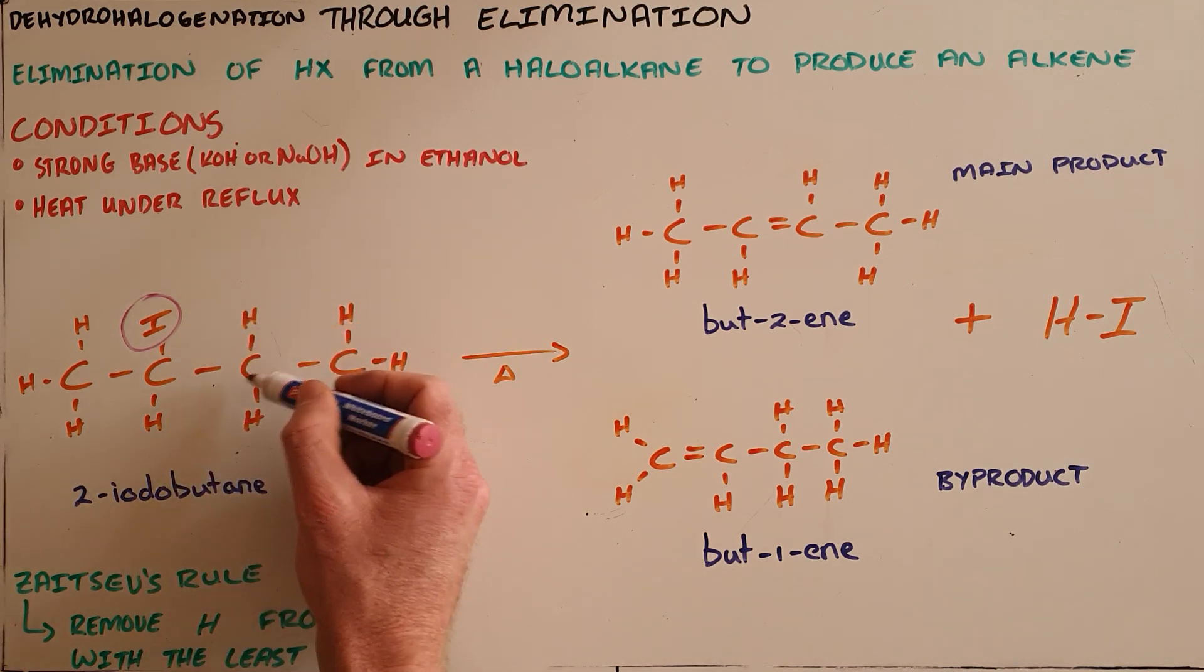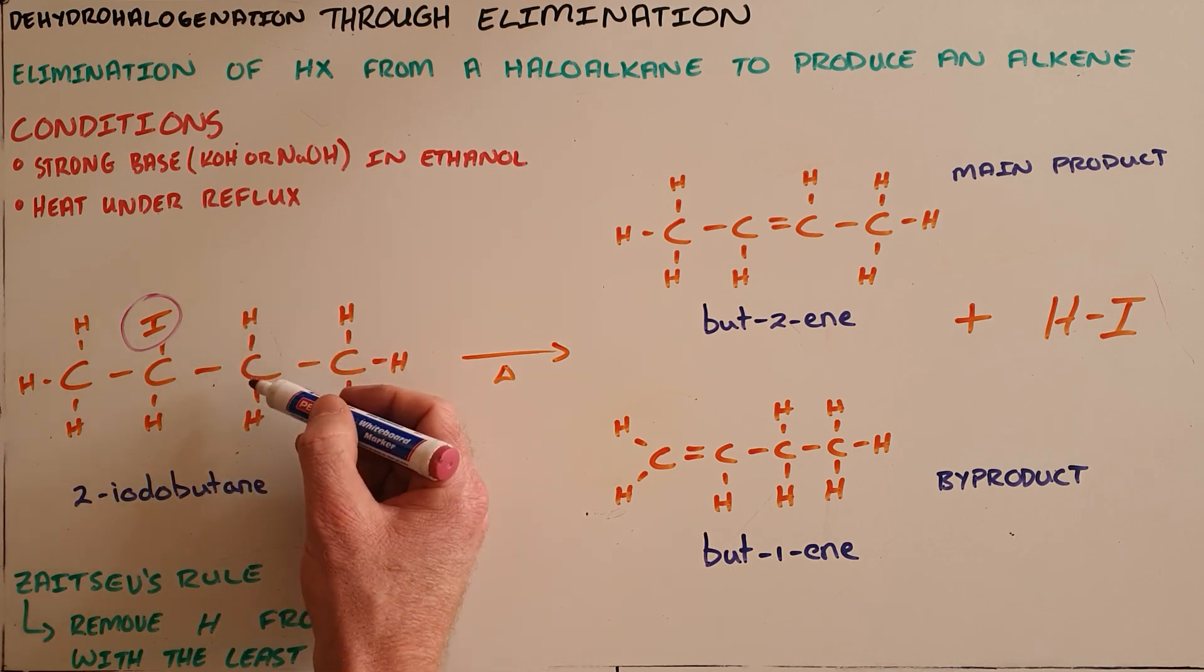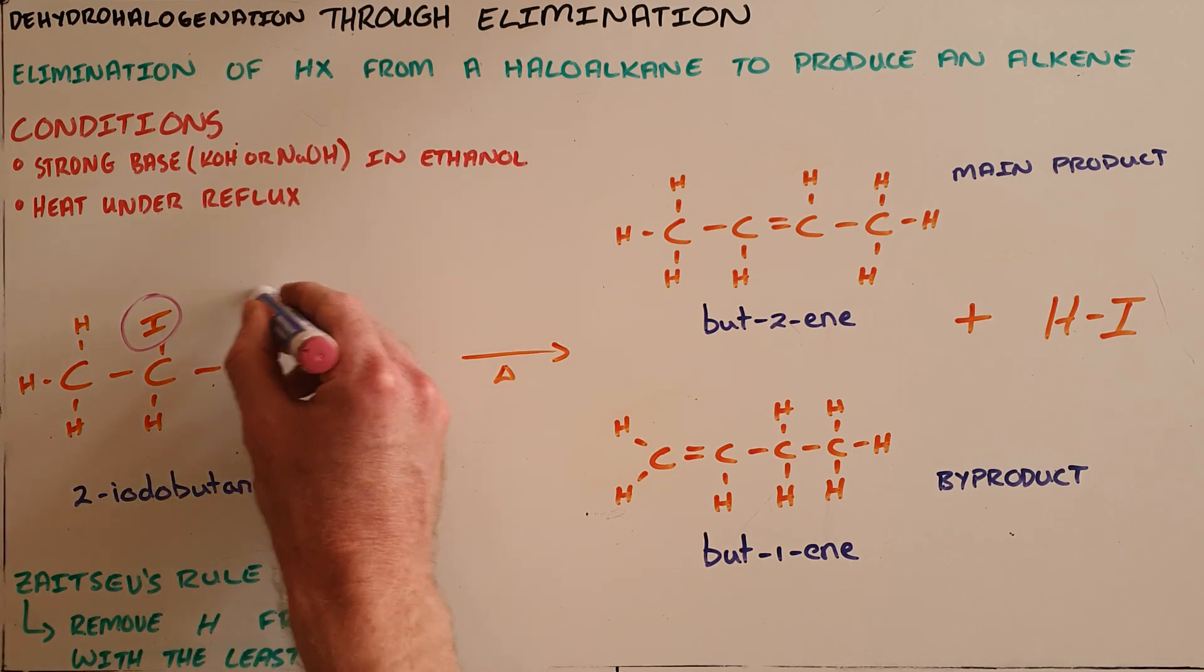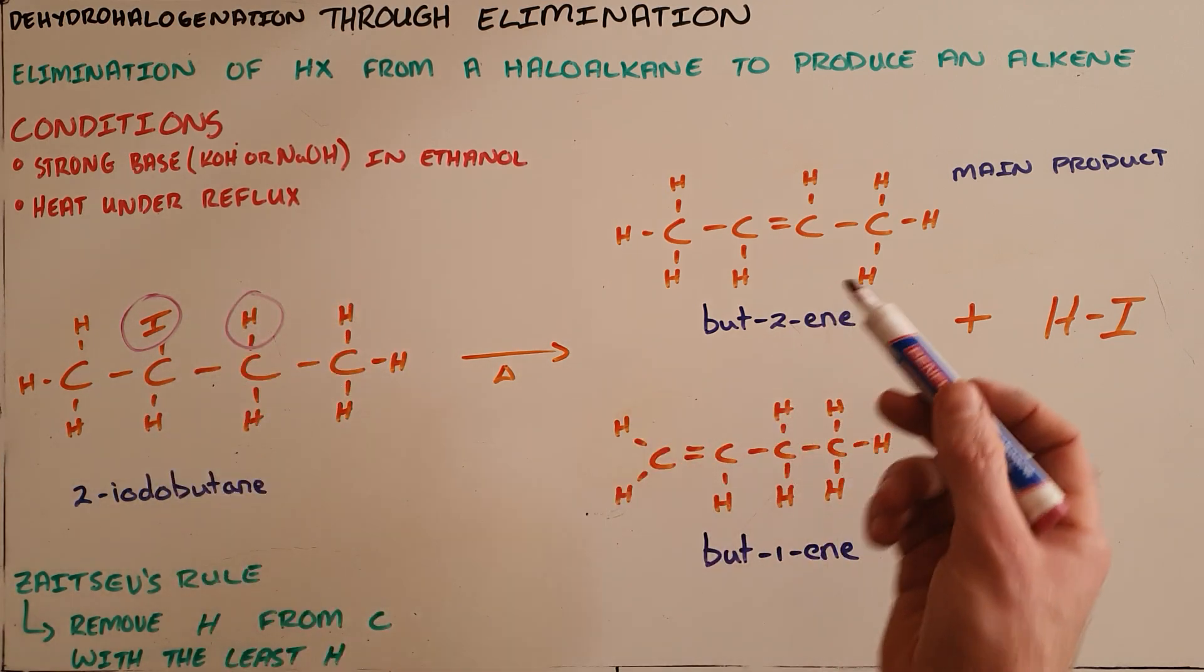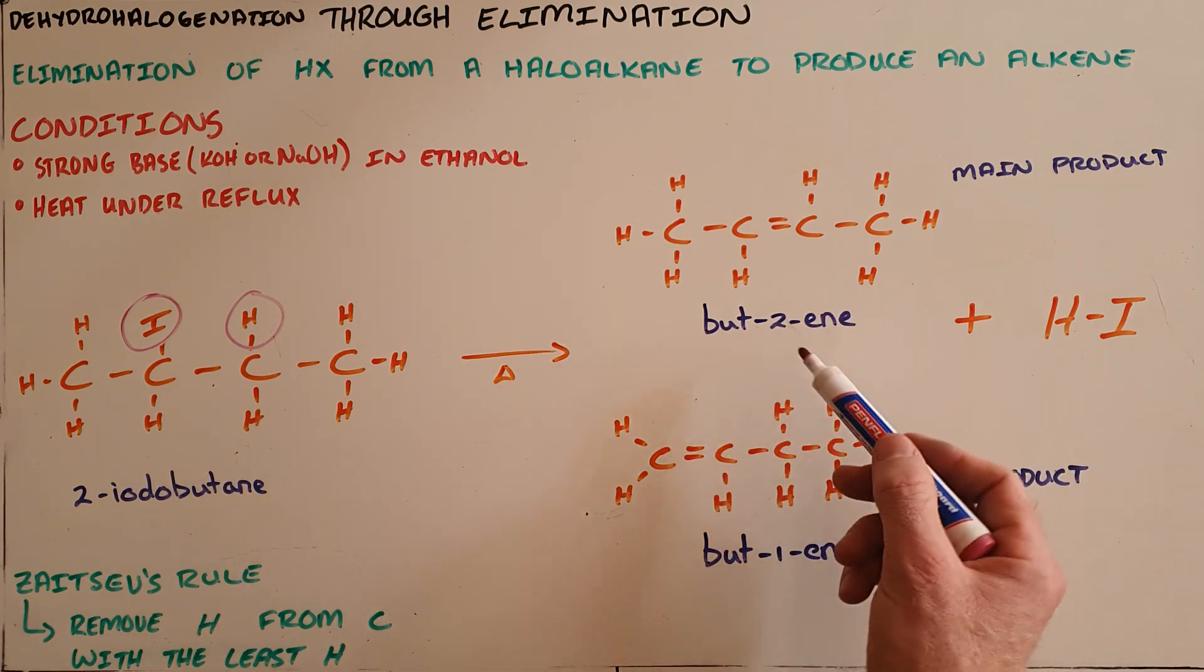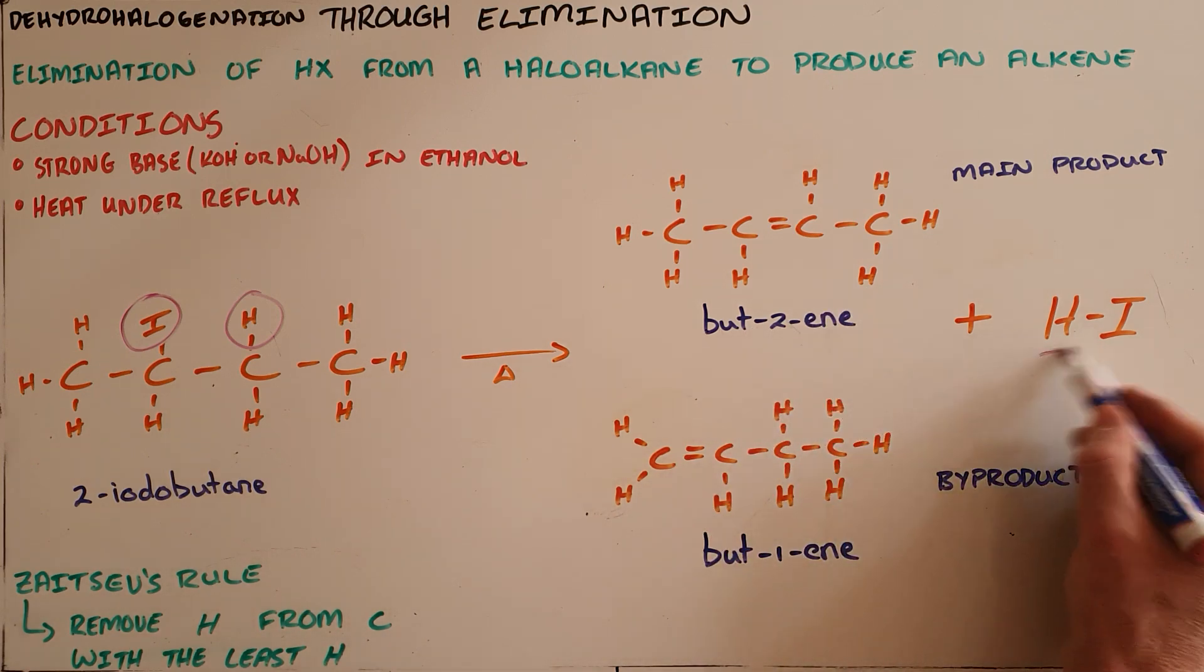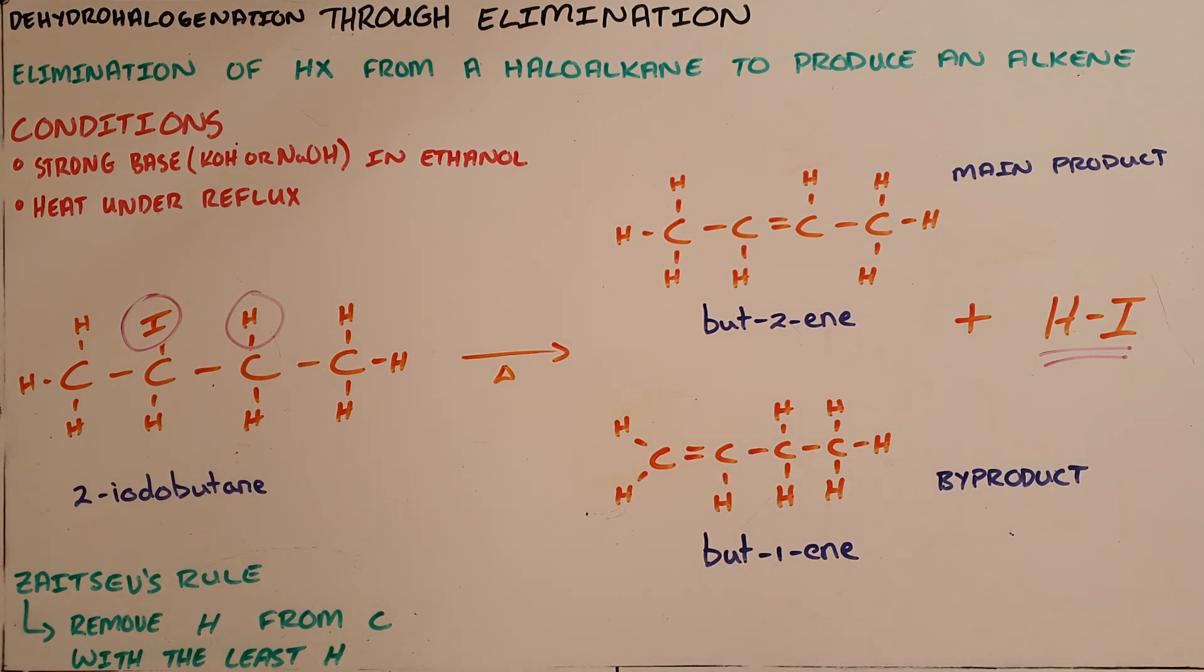Or the fewest, which over here is this carbon, as this carbon only has two hydrogens. As a result, our main product would then be but-2-ene, as well as obviously the hydrogen iodide that is formed.